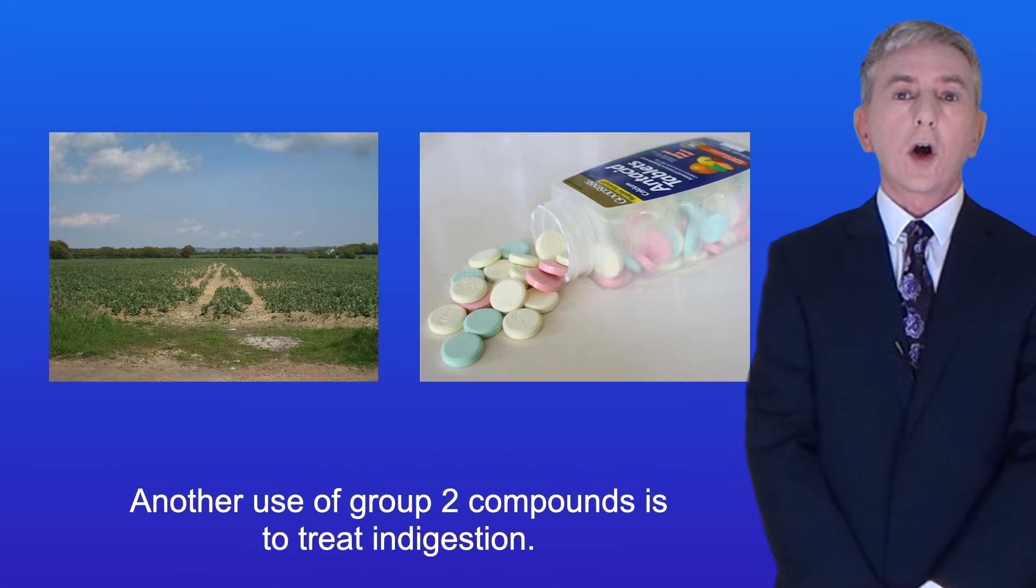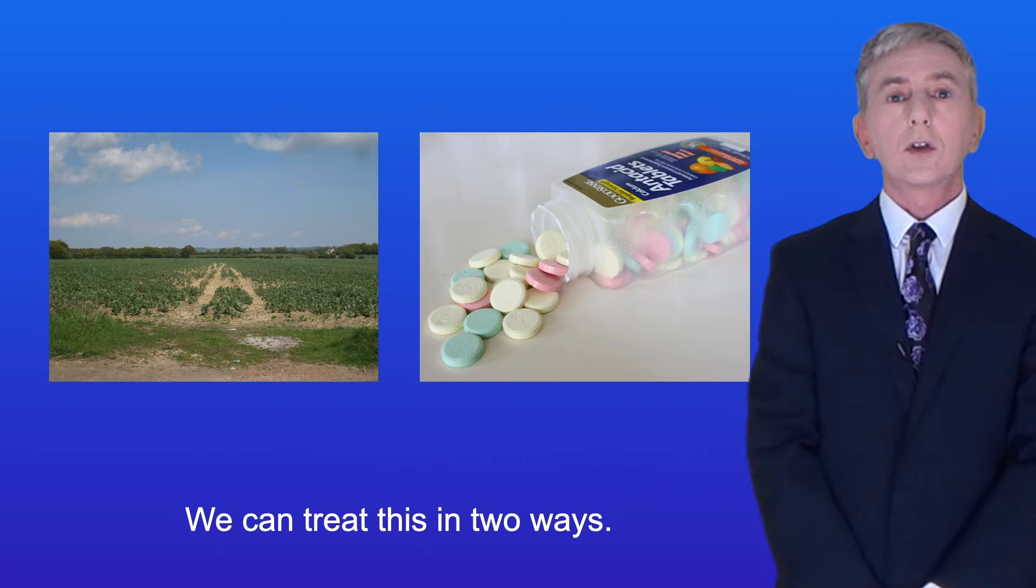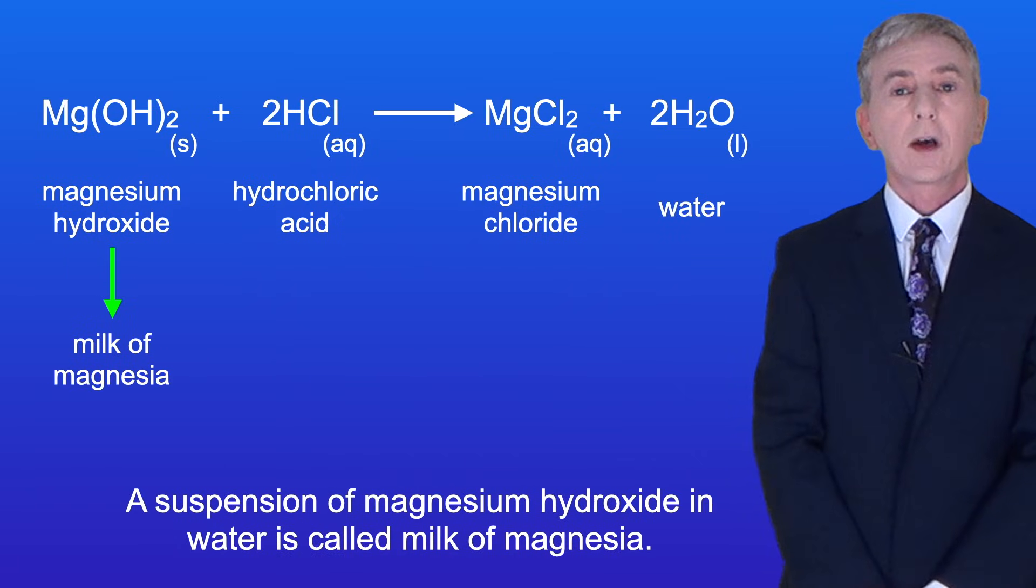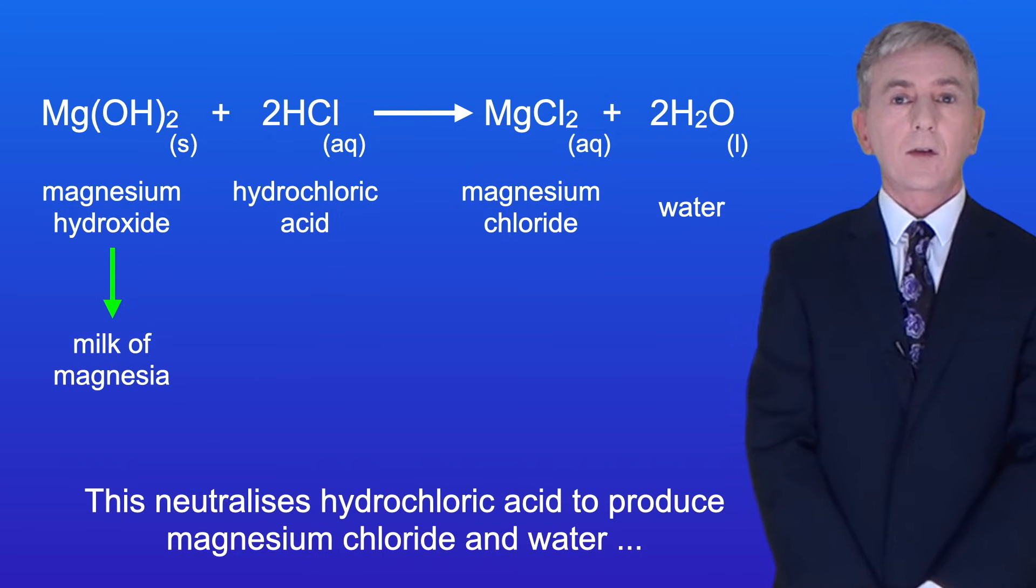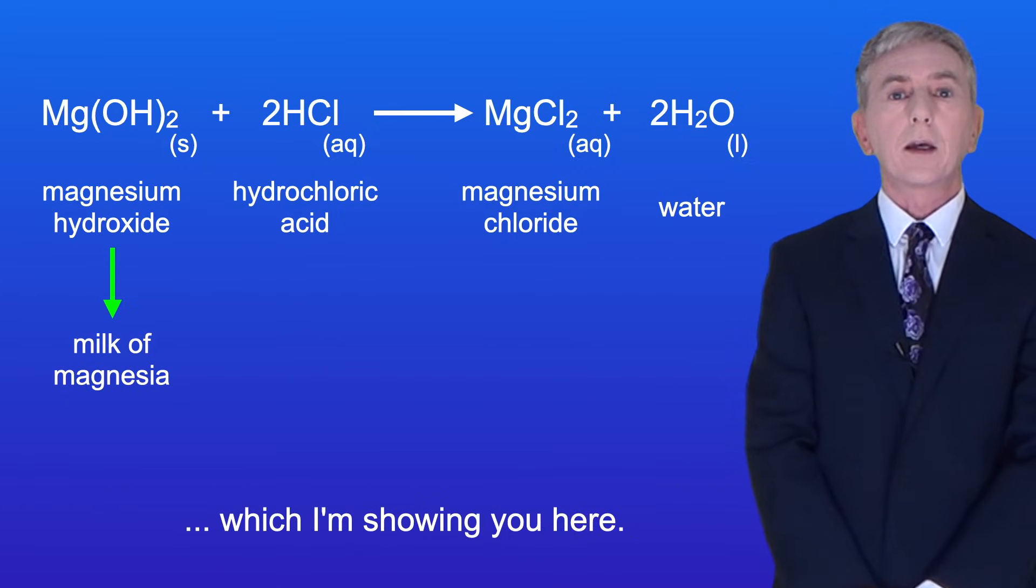Another use of group 2 compounds is to treat indigestion. Indigestion is often caused by excess hydrochloric acid in the stomach. We can treat this in two ways. A suspension of magnesium hydroxide in water is called milk of magnesia. This neutralizes hydrochloric acid to produce magnesium chloride and water, which I'm showing you here.